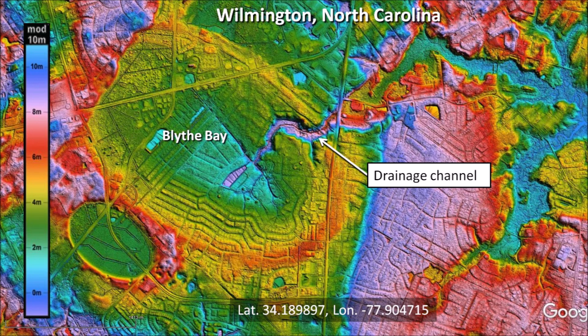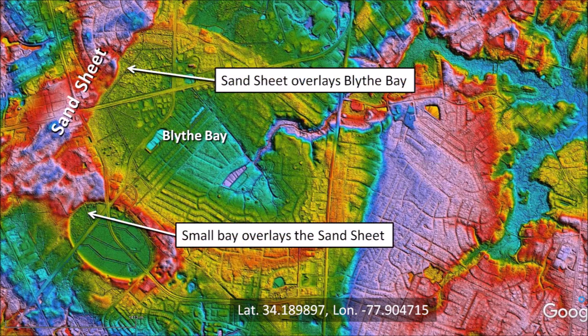The rim of Blythe Bay is approximately 4 meters higher than the center of the bay. There are hundreds of houses within this bay. Many bays have wet interiors, but Blythe Bay is kept dry by a drainage channel on the east side of the bay. A sand sheet that originated from the adjacent Cape Fear River provides a clue about the sequence of formation of these bays.